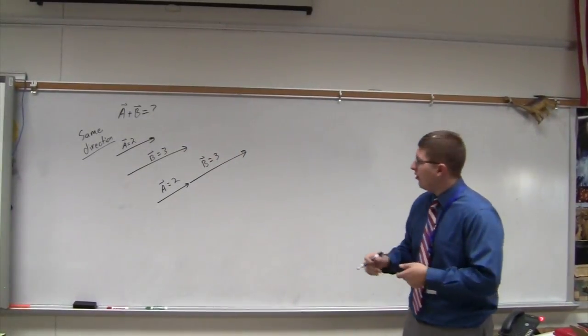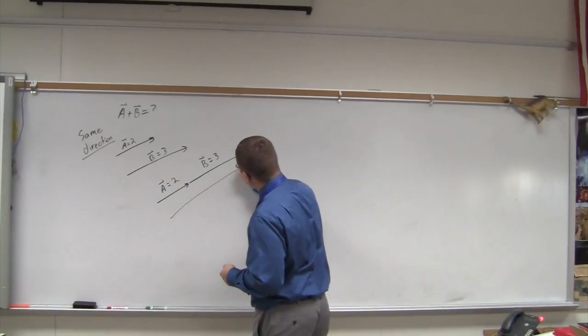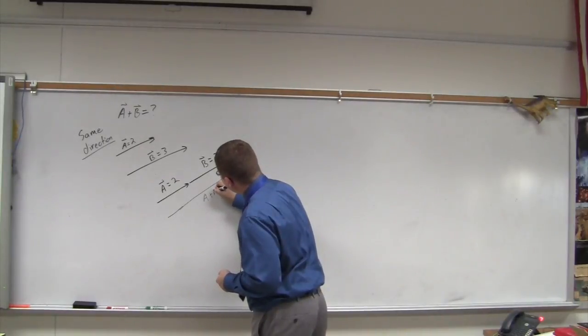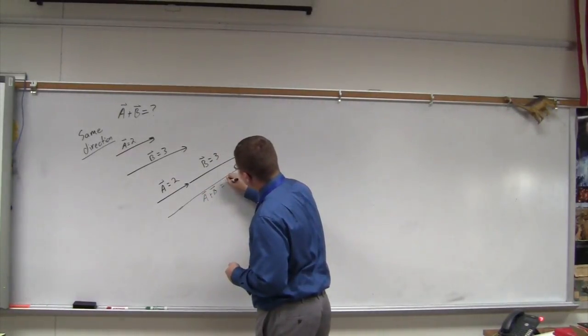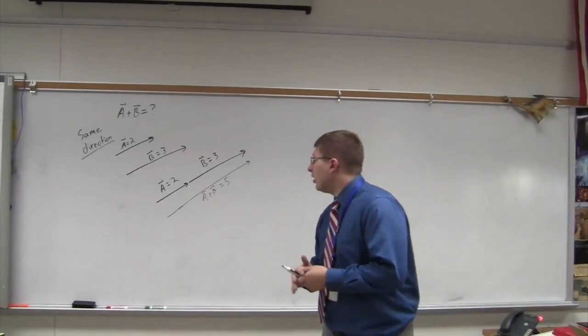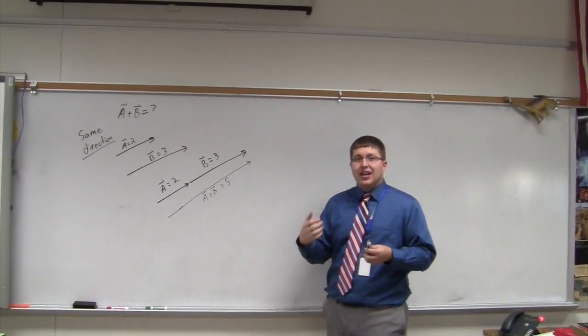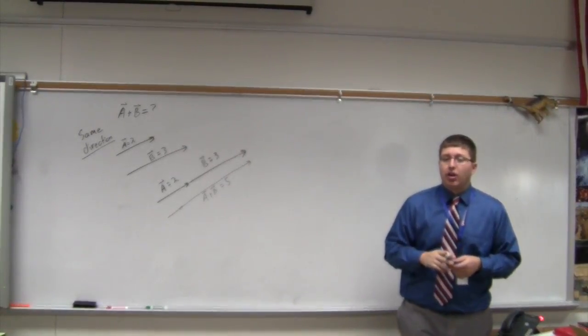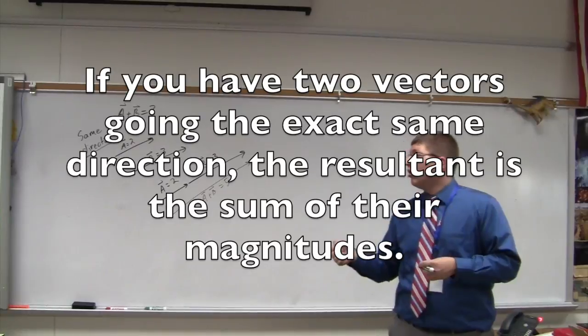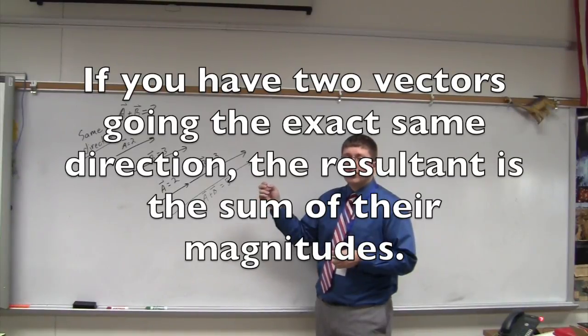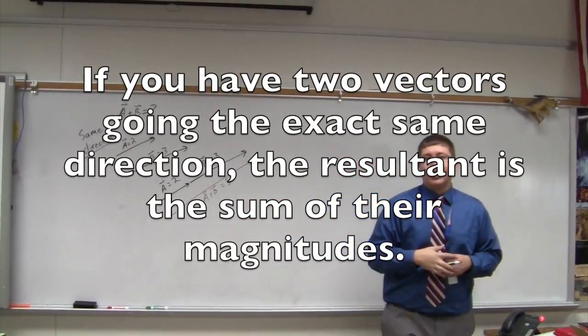and a vector going the same direction with a magnitude of three, what we really get is a vector with a length of five. And so A plus B is very simply five units going in the exact same direction. So we almost came up with a little rule there. If we have two vectors going in the exact same direction, you can just add their magnitudes. That's probably worth putting in your notes even though I didn't write it up on the board there. I'll say it one more time. If you have two vectors going in the exact same direction, the resultant is simply the sum of their magnitudes.